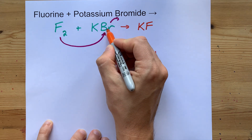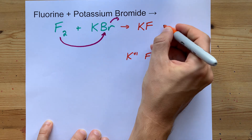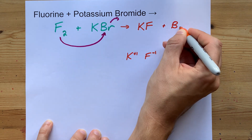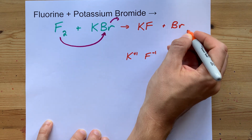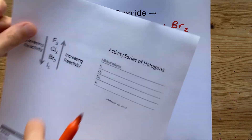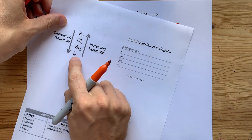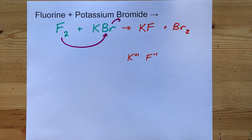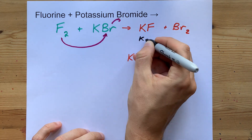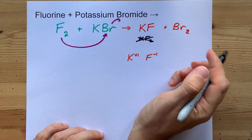Bromine, when it is ejected from this pairing, becomes just elemental bromine — but elemental bromine is Br₂. In fact, all of the halogens as an element are diatomic (X₂). I want to emphasize that because I've seen a lot of students write KF₂, which is not a real thing.